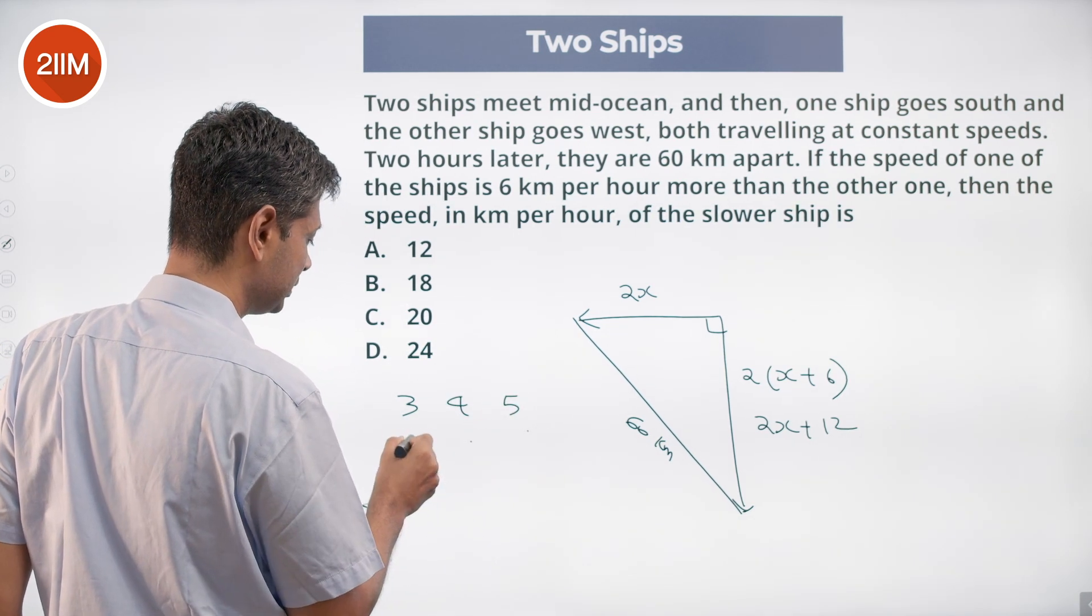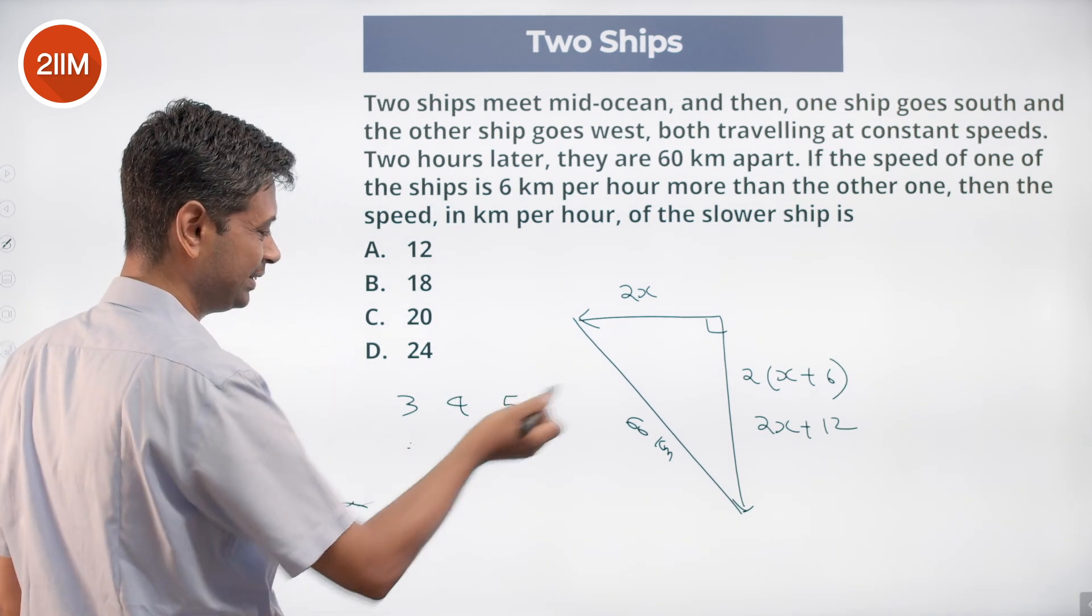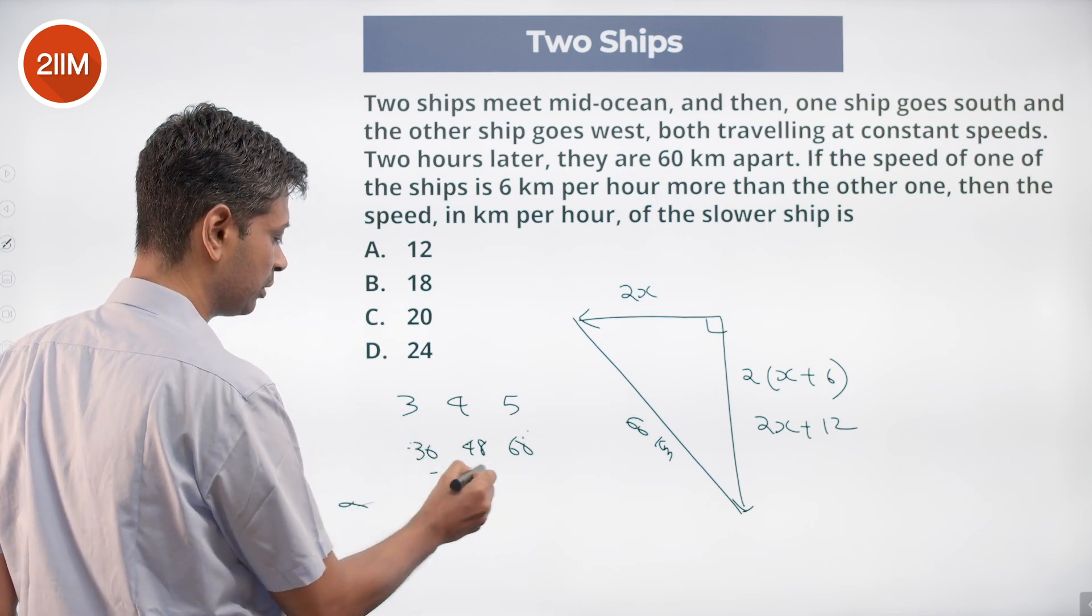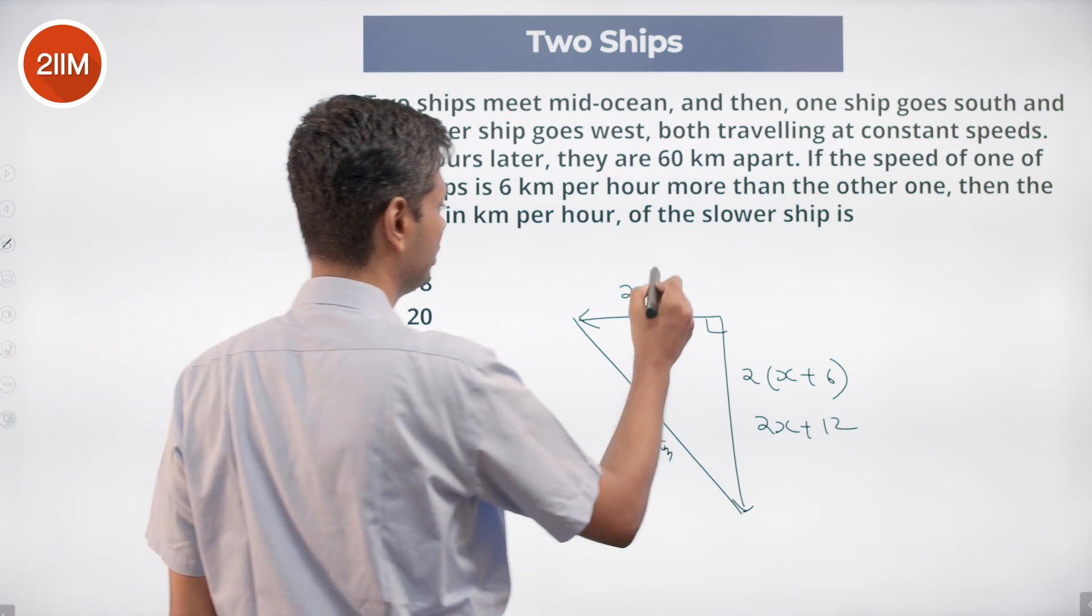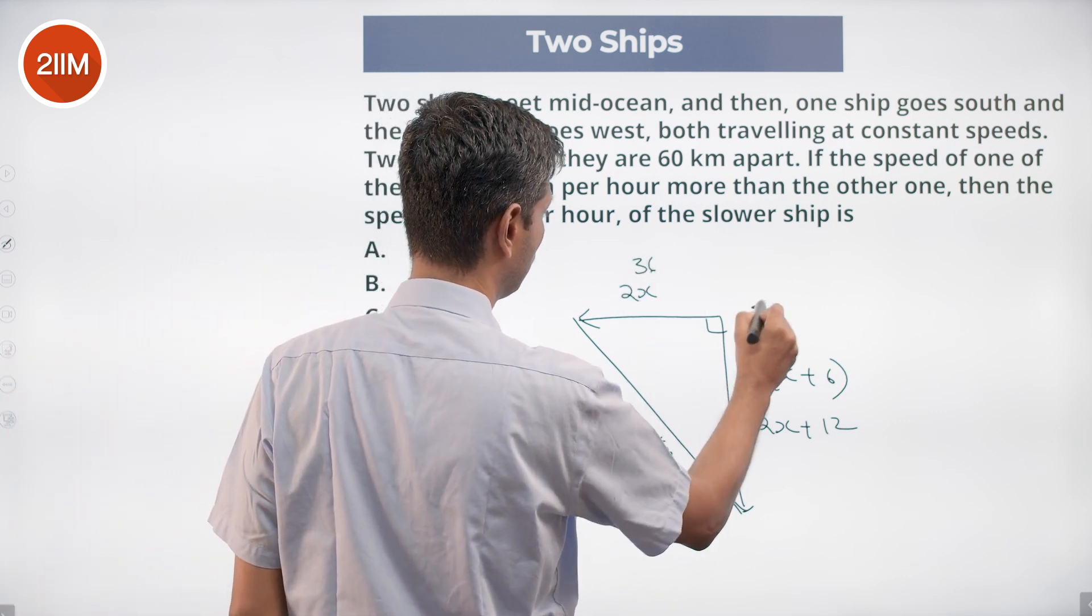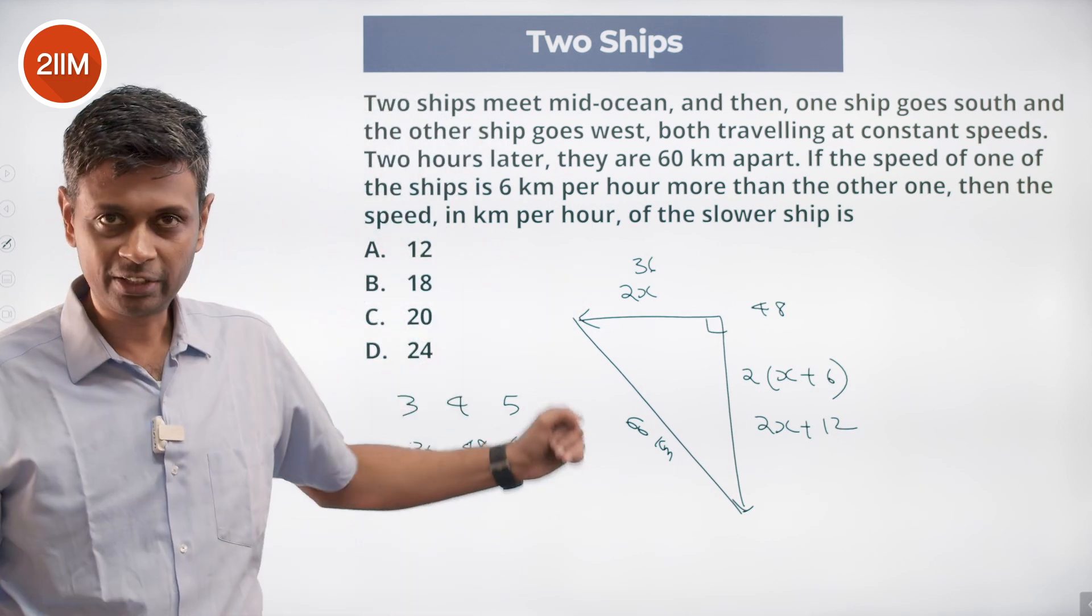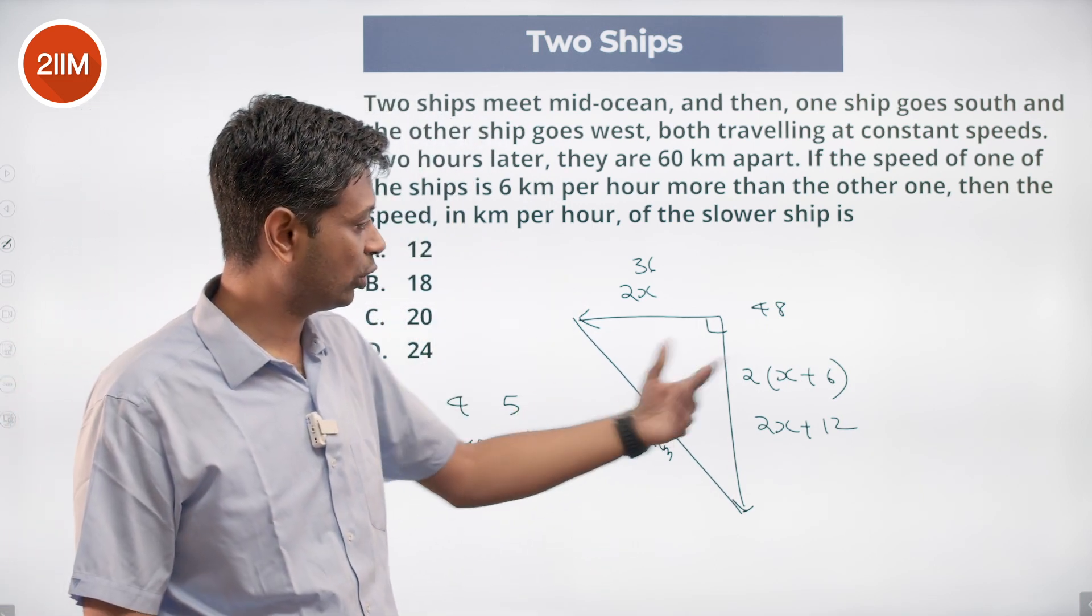So this is 36-48-60, that's the Pythagorean triplet. So the faster ship has covered 48 kilometers, slower ship has covered 36 kilometers.